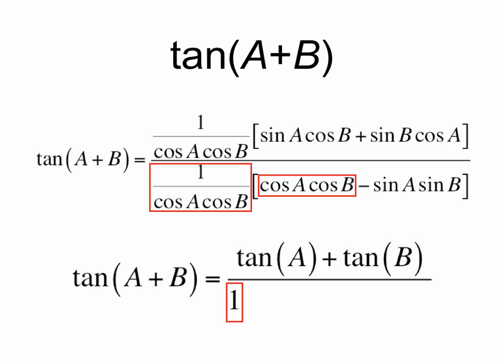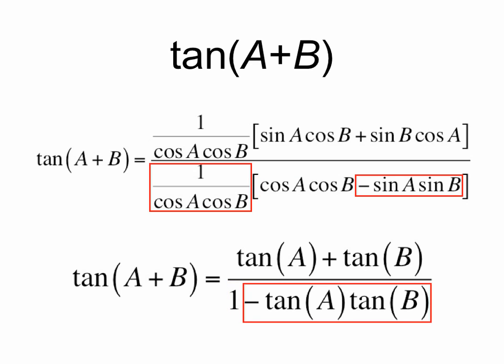In the denominator, cosine a cosine b over cosine a cosine b is 1, and sine a sine b over cosine a cosine b is the tangent of a times the tangent of b, and remember to include the minus sign there.